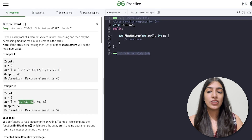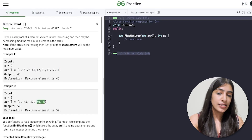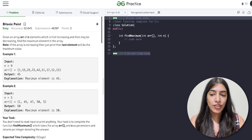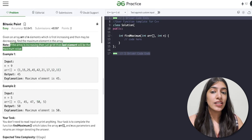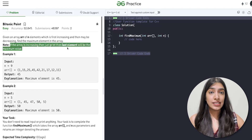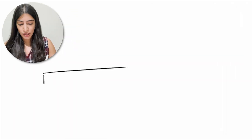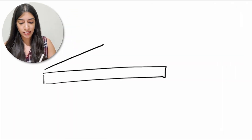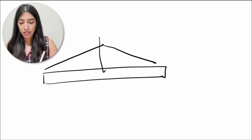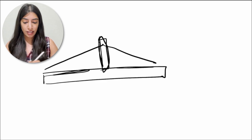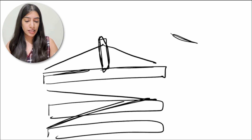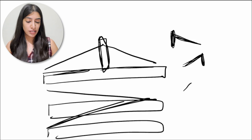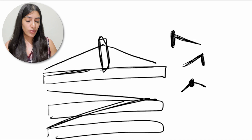Similarly, here the elements increase up to 47 to 50, and from 50 they start decreasing. So 50 and 45 are bitonic points and that is what we have to find. If the array is purely increasing, print the last element — that will be the maximum. It is also possible that the first half or second half is absent, making the array continuously decreasing or continuously increasing. In those cases, the first or last element is your bitonic point.